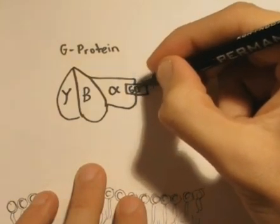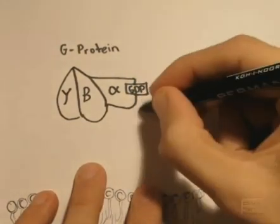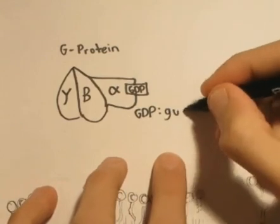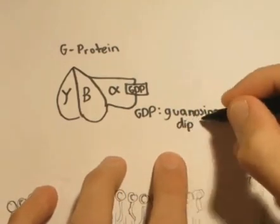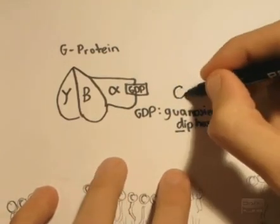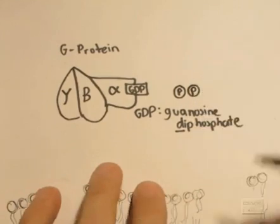When the G-protein is not doing anything or is inactive, GDP is bound to the alpha portion of the G-protein. GDP stands for guanosine diphosphate, diphosphate as in two phosphates.